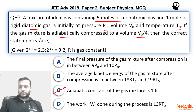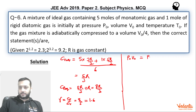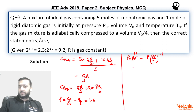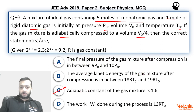Now we have to find the final pressure of the mixture. For that we use the adiabatic equation PV^γ = constant. So initial: P0 × V0^1.6 = final pressure P × (V0/4)^1.6. V0 cancels, giving P = P0 × 4^1.6. Writing 4 as 2², we get 2^3.2, which equals 9.2. So P = 9.2 P0. This is also correct because the option says it comes out between 9 and 10.